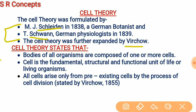Schleiden was a German botanist who in 1839 studied a large number of plants and found that the bodies of all plants are made up of cells. Similarly, Schwann observed many animal bodies and concluded that the bodies of all animals are made up of cells. These conclusions were combined and presented as the cell theory. Virchow further concluded that all cells arise from pre-existing cells.